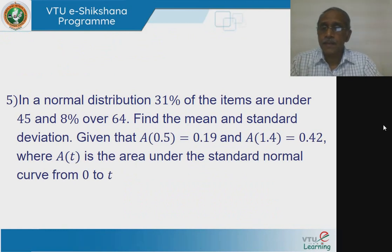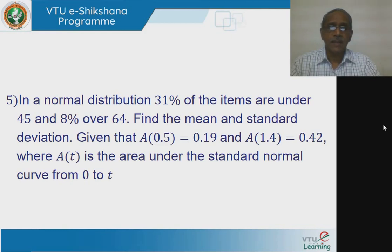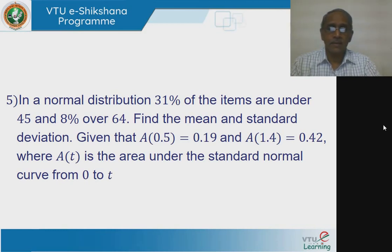Consider this question. In a normal distribution, 31% of the items are under 45 and 8% over 64. Find the mean and standard deviation. Given that the area from z=0 between z=0 and z=0.5 is 0.19, and the area between z=0 and z=1.4 is equal to 0.42, where A(t) is the area under the standard normal curve from 0 to t.